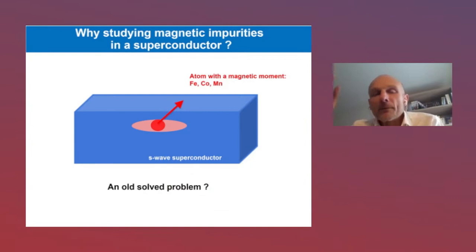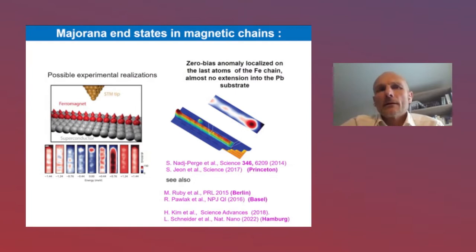This problem has been solved a long time ago, in the 60s, and we expect bound states. It turns out that this problem is well known and solved, but it regains some interest. Essentially, it was motivated by the perspective of magnetic bound states using chains of magnetic adatoms on top of superconductors.